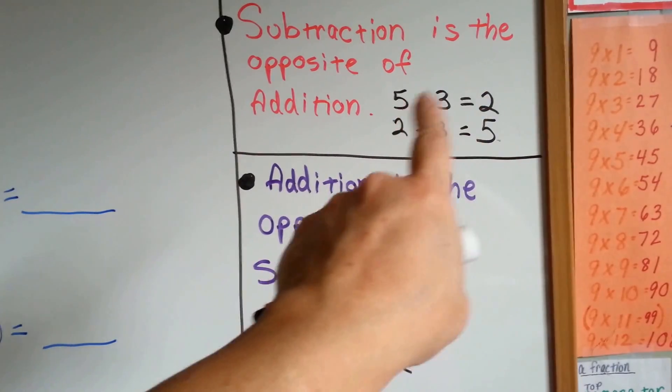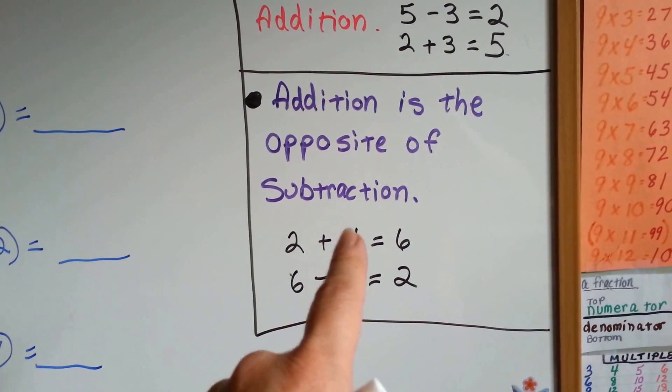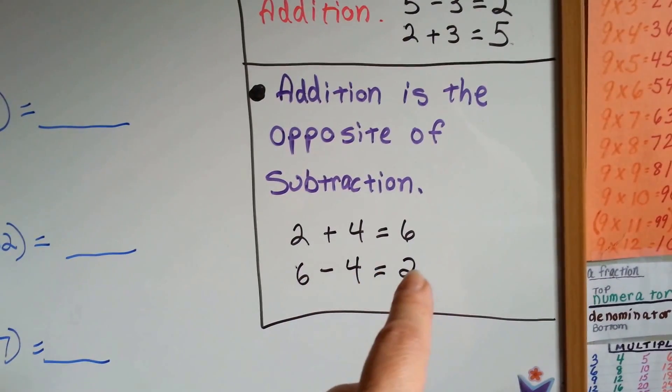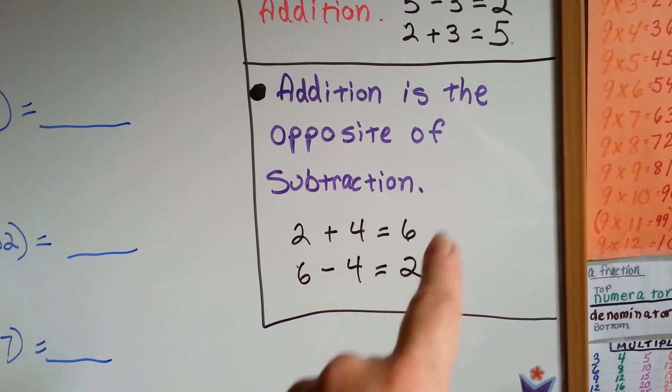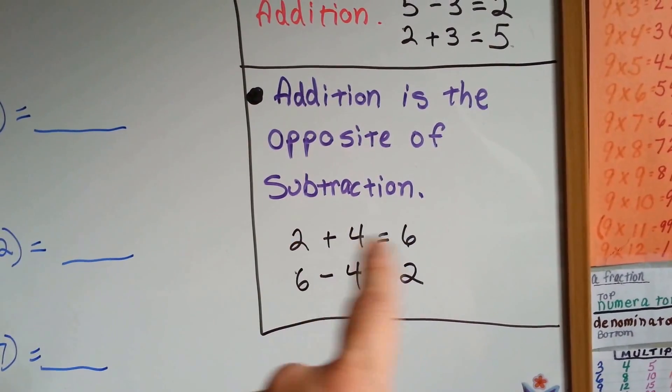So it's a fact family. See how we use the same numbers? Same thing with the addition. 2 plus 4 equals 6. 6 minus 4 equals 2. Fact families, and we use the same numbers.